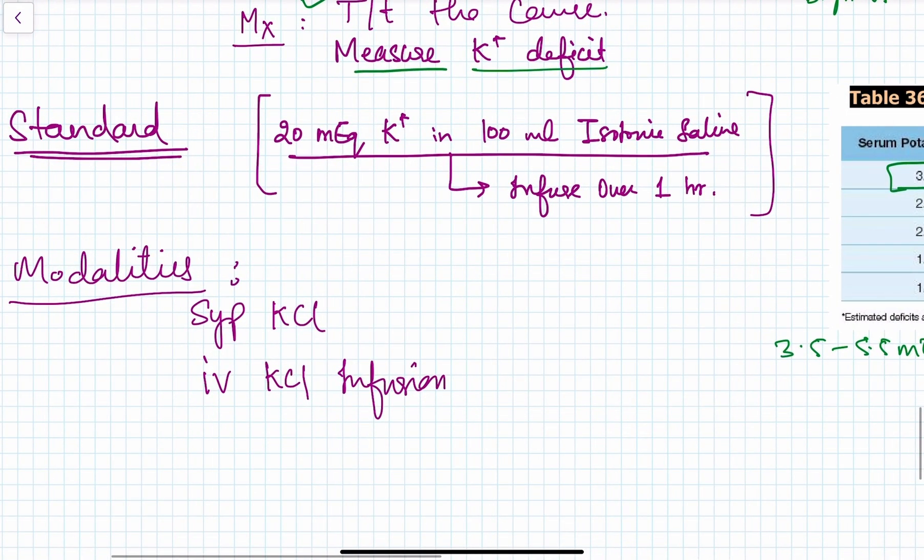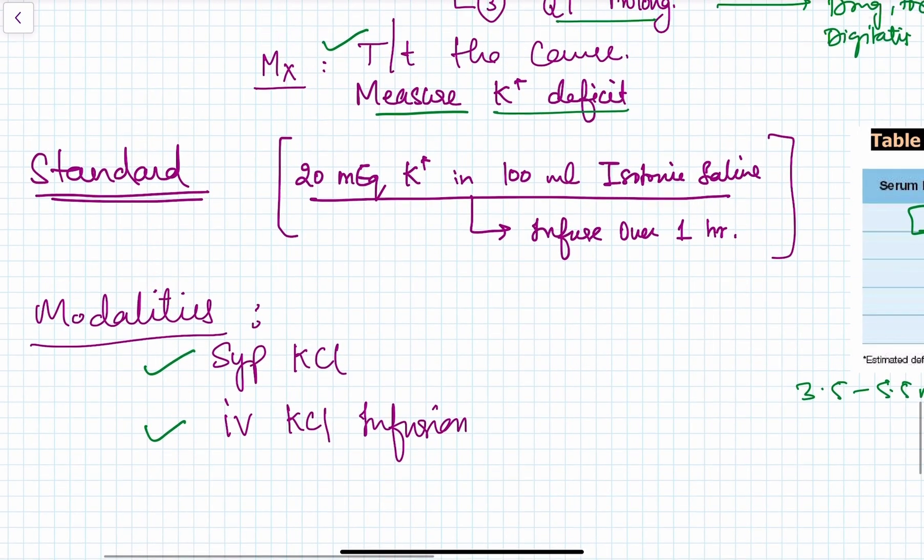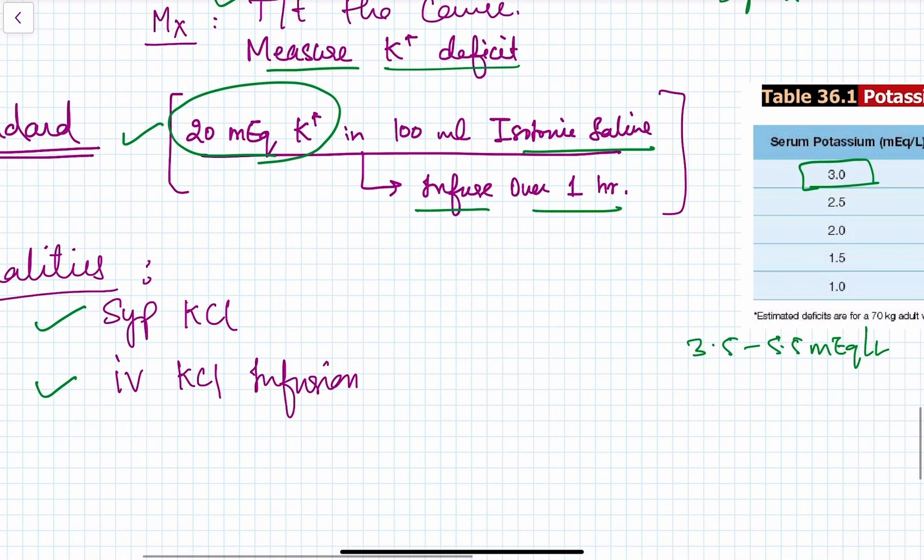We have two modalities for correction: syrup potassium chloride and IV potassium infusion. The standard is 20 mEq potassium ampoule broken in 100 ml isotonic saline, infused over one hour. After one hour, we measure potassium levels again.